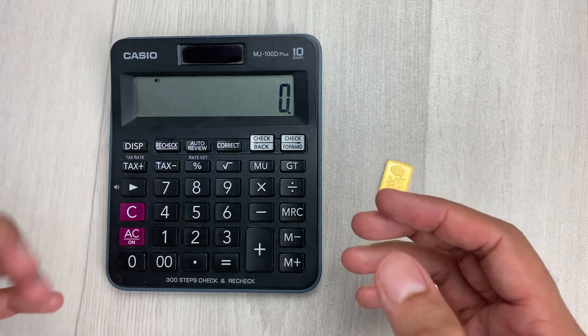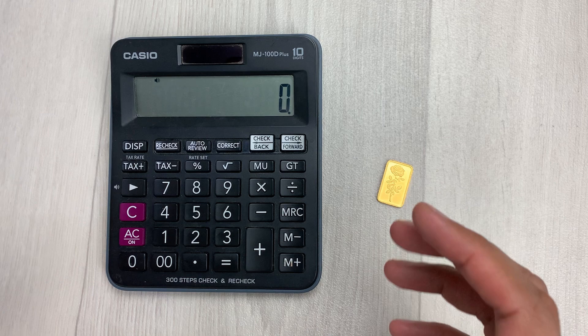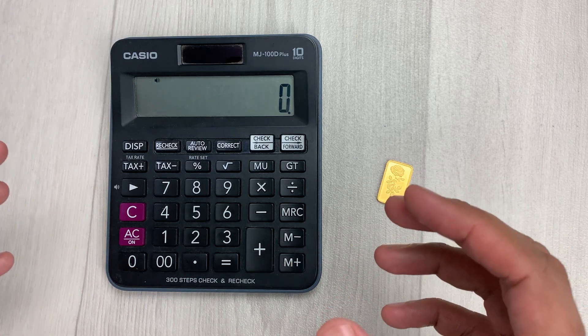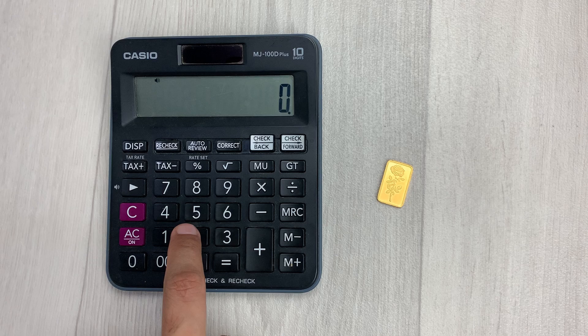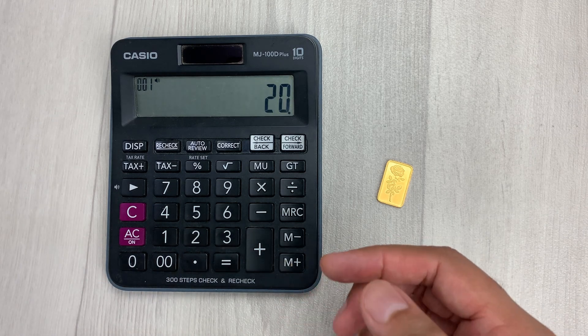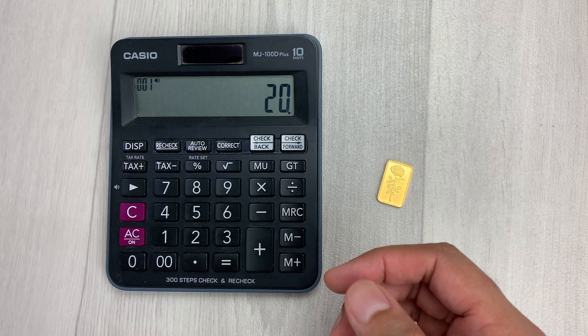For example, you have a piece of jewelry and it says 20 carat gold. You have to type 20 on your calculator, and then in the next step, you have to divide it by 24.